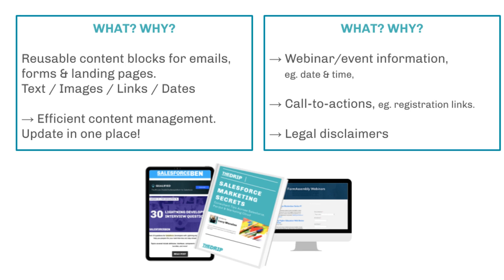Next is snippets. Snippets are reusable blocks of content for emails, forms, and landing pages. In these blocks you can use text, images, links, and dates. The real amazing benefit of snippets is that it makes content management so much more efficient — you make the change in one central place and those changes cascade down to all the places it's being used. It's a big win if you're using a lot of engagement studio programs, because engagement studio programs use email templates and, as email templates exist independently of one another, it is such a pain to have to go into each email template and update them all so that they look the same in the program.